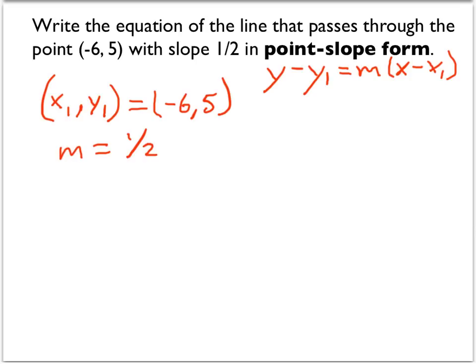Now all that's left to do is substitute these numbers into the point-slope form. So we have y minus y1, and remember y1 was 5, so y minus 5 equals the slope, which is 1/2, times the quantity x minus x1. And x1, of course, is negative 6.